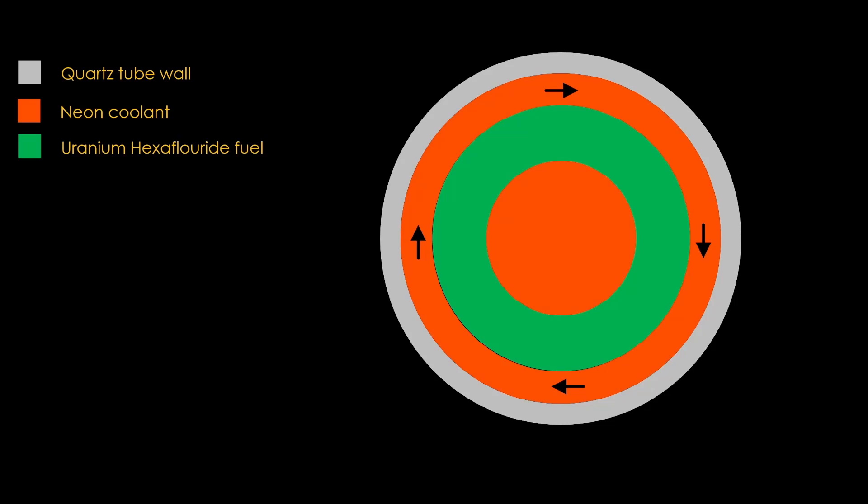And inside that is our fuel, uranium hexafluoride gas, with more neon inside of that. That gives you a very hot gas nuclear core that puts out a ridiculous amount of radiation, hence the light bulb term.